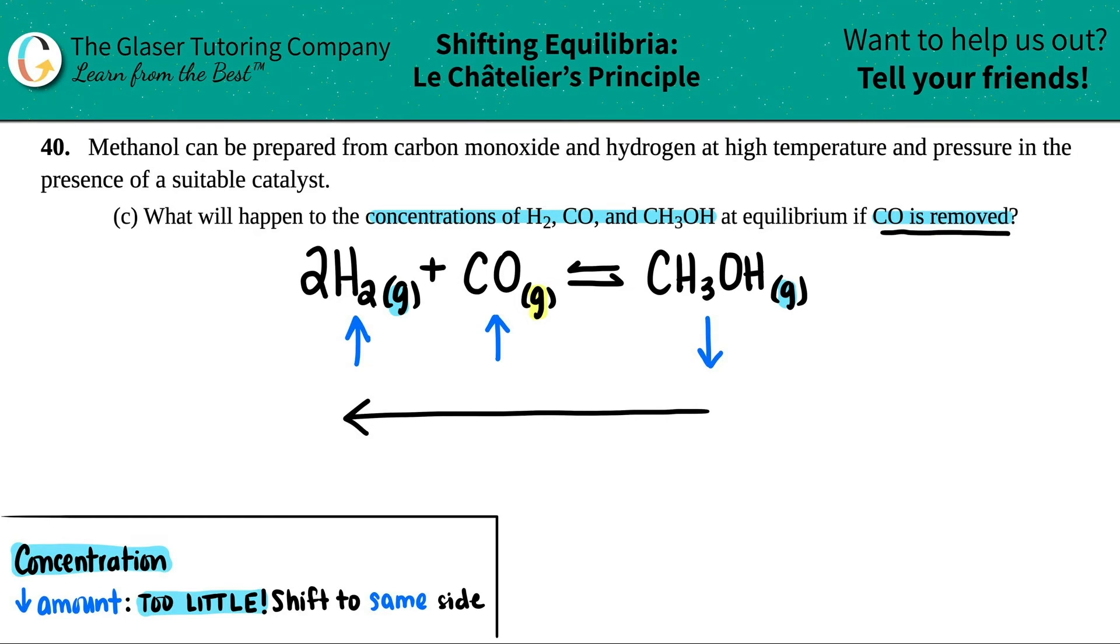They said, what will happen to the concentrations of H2, CO and CH3OH? For H2, the concentration, aka the brackets, that will increase. The concentration for CO, that will increase. And the concentration for CH3OH, that will decrease. And there are your three answers.